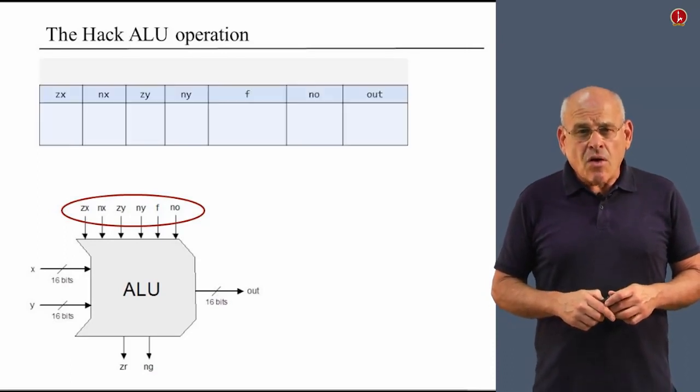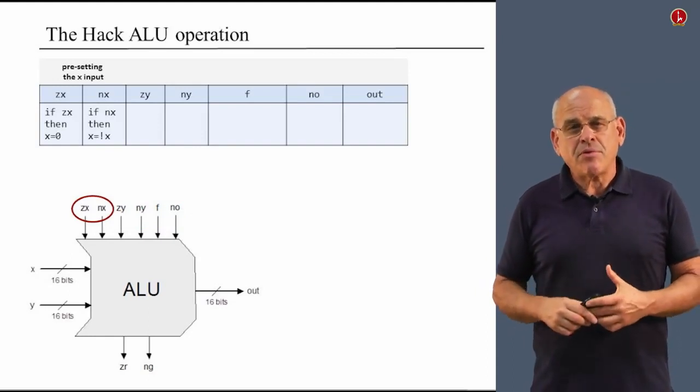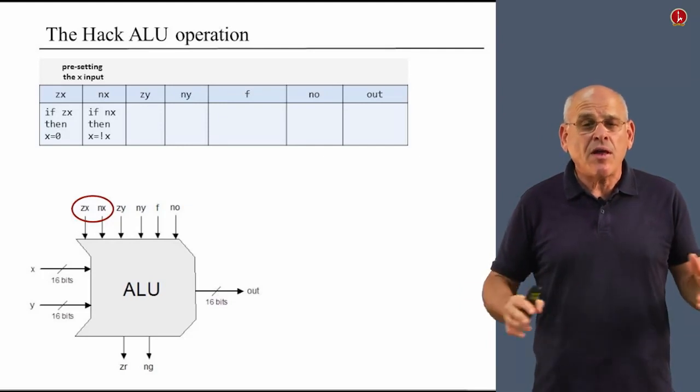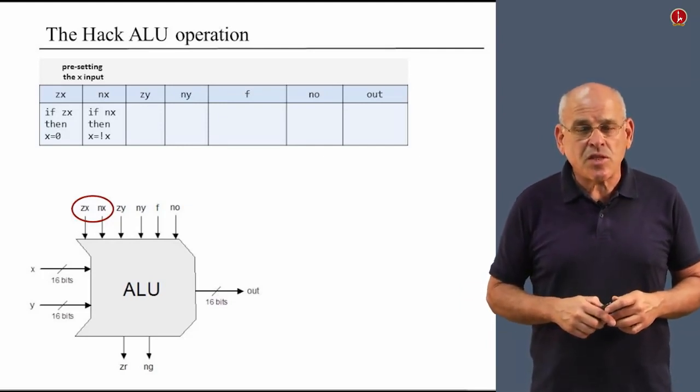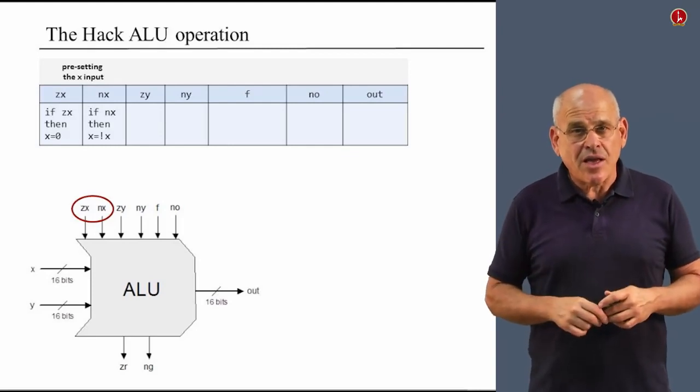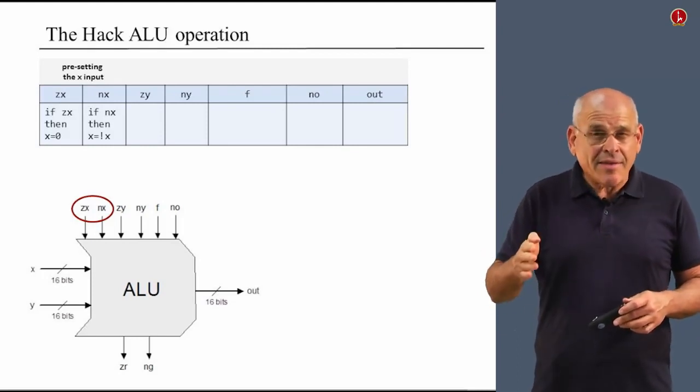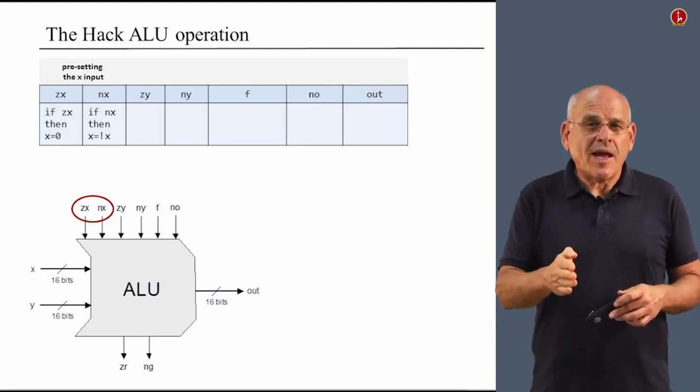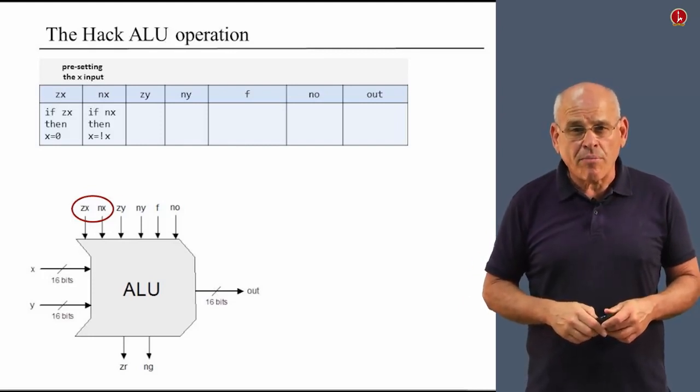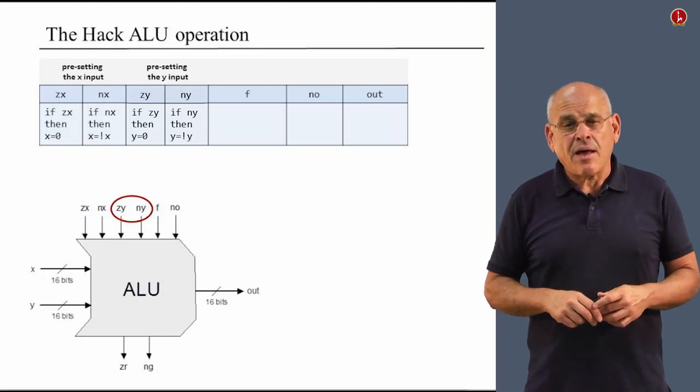I want to focus on the six control bits and explain the names and the operations of every one of these bits. So, if zx equals 1, what we want to do is set the x input to 0. So irrespective of what x is, we set it to 0. If nx is 1, we set the x input to not x. This is bitwise negation. And also notice that these two things happen one after the other. So for example, if zx equals 1 and nx equals 1, first of all, we zero the x input and then we negate it. So we'll get 1, 1, 1, 1, 1, 1, 1, if this is indeed the values of these two control bits.